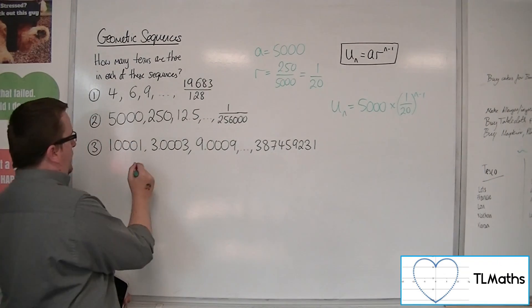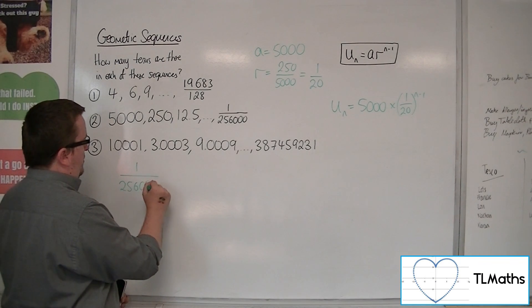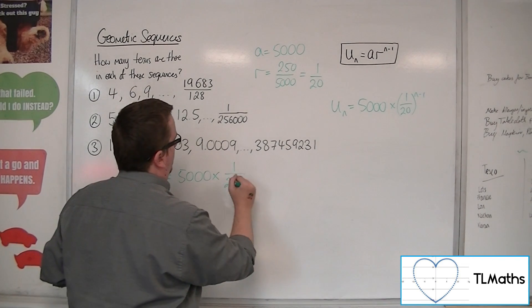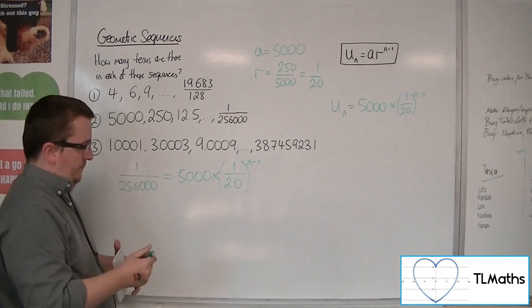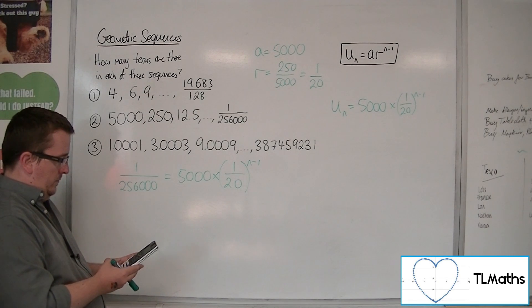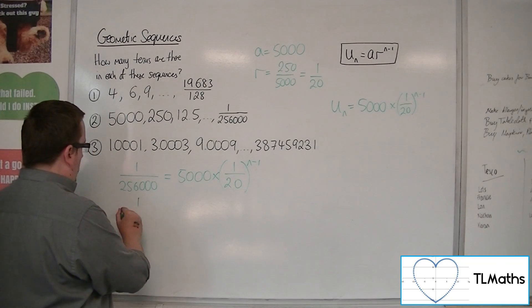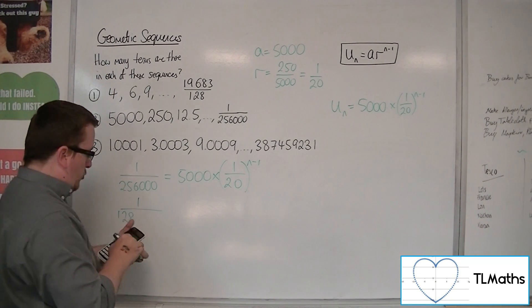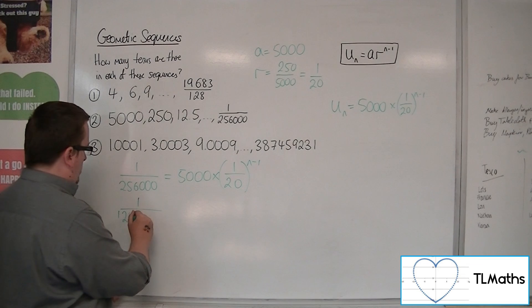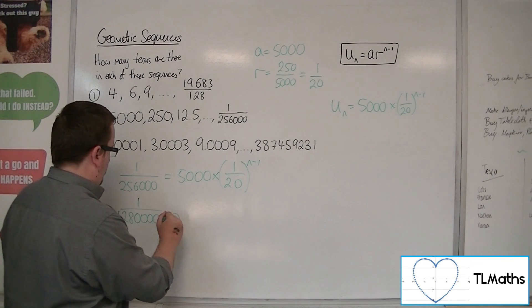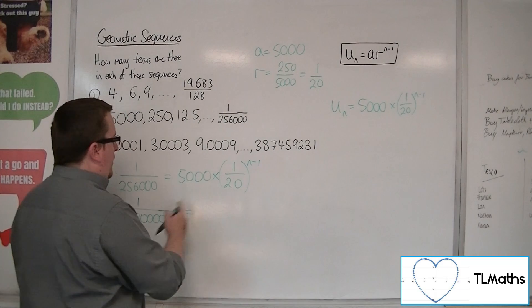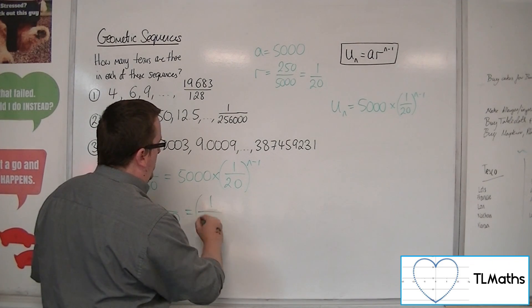So this term, 1 over 256000, must be equal to 5000 times 1 over 20 to the n minus 1. So if we divide both sides by 5000, we get 1 over 1280000. Just double check that, 1, 2, 3, 4, 5, 6, 7. Yes. Okay, so I've divided both sides by 5000, which leaves me with this equation here.